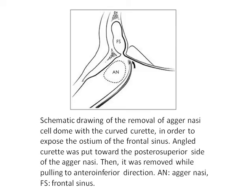This diagram shows the removal of the agar nasi cell dome with a curved curette in order to expose the ostium of the frontal sinus. The angled curette is put forward towards the posterior side of the agar nasi and then removed while pulling in an anteroinferior direction. That is how the dome of the agar nasi is removed.